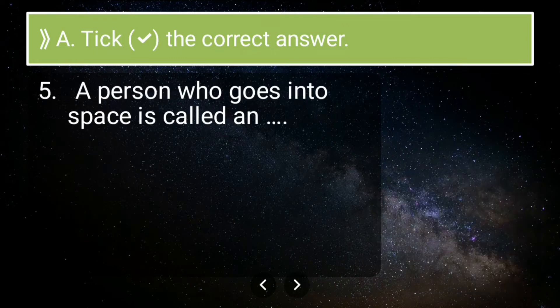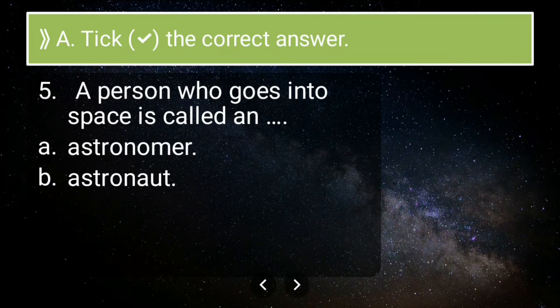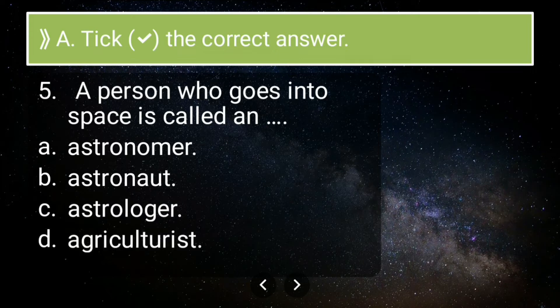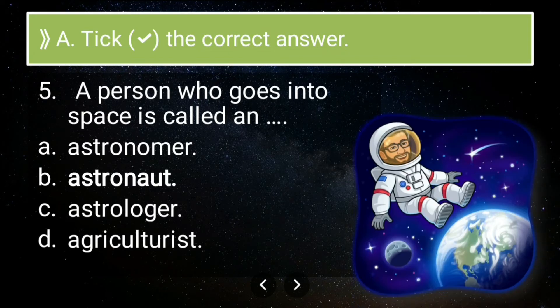Fifth question: a person who goes into space is called an astronomer, astronaut, or astrologer? The person who goes to space is called an astronaut. The correct answer is B, astronaut.